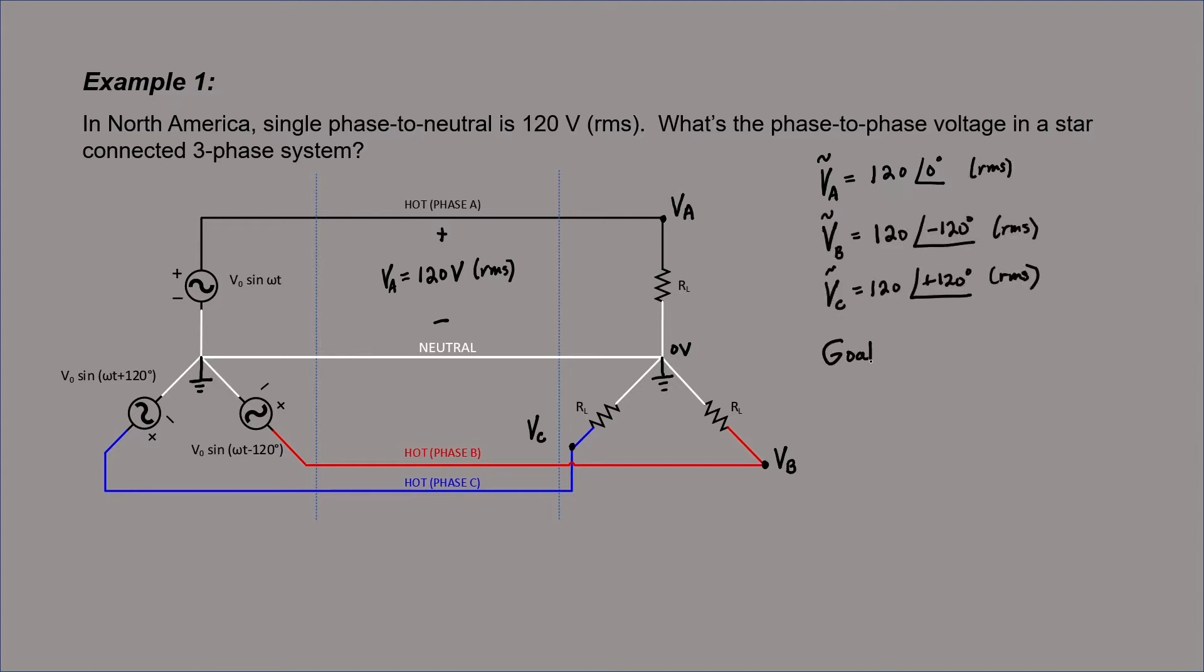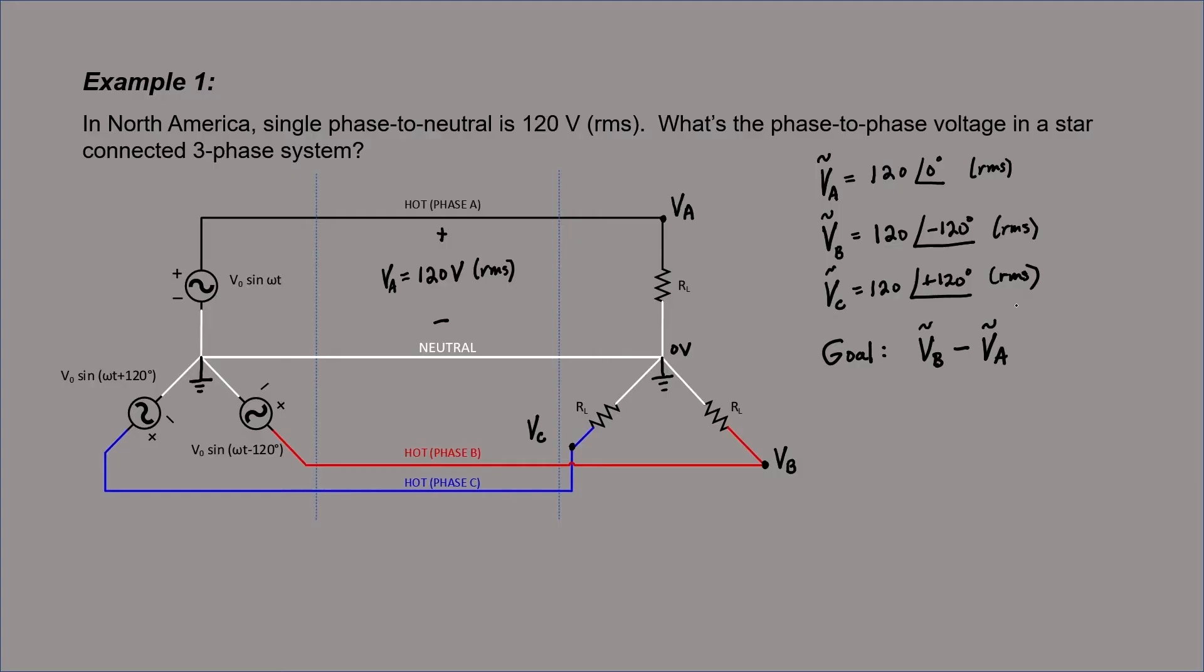Our goal here is to find the phase-to-phase voltage. In other words, if I were to take a voltmeter and put one end on phase A and one end on phase B, what voltage would I read? It's not going to be 120 volts. 120 volts is the voltage I would read if I were to connect one side of my voltmeter to the phase and the other side to neutral. What we're interested in here is the difference.